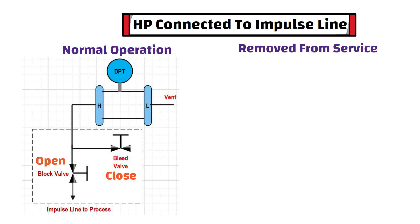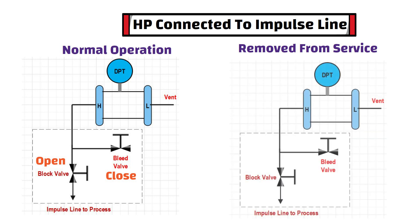On the other side, when DP transmitter is removed from service, block valve is in closed condition and bleed valve is in open condition.